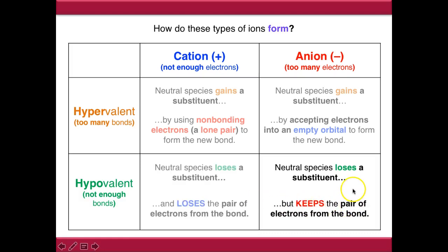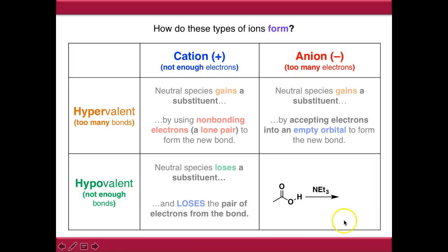If we look at anions, we need to lose a substituent, but in this case we need to keep the pair of electrons from the bond. A classic example of this is deprotonation - the vast majority of the time, this is going to be deprotonation.